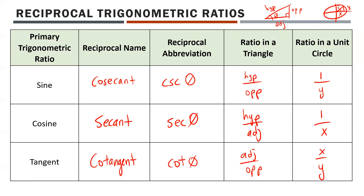Why do we care about reciprocal trig ratios? Honestly, there are some situations where it's easier to simplify an expression using one of these reciprocals, but for practical triangle-solving on the Cartesian plane, sine, cosine, and tangent have your bases covered. There's no calculator button for these reciprocals, so you always find the primary ratio first and take 1 over that value.